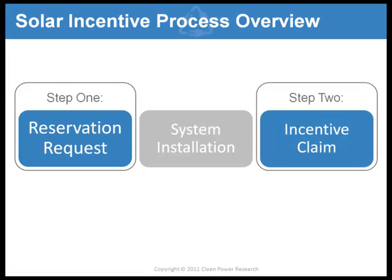You'll begin the application process by using PowerClerk to fill out and submit an incentive reservation request. Program administrators will review your request and any supporting documents to make sure that the proposed system meets program requirements. As your reservation request is being reviewed, you'll be able to check the status of your application by logging into PowerClerk. Then, depending on program criteria and available funds, the program administrator will confirm your reservation, effectively setting aside the money to pay your incentive.